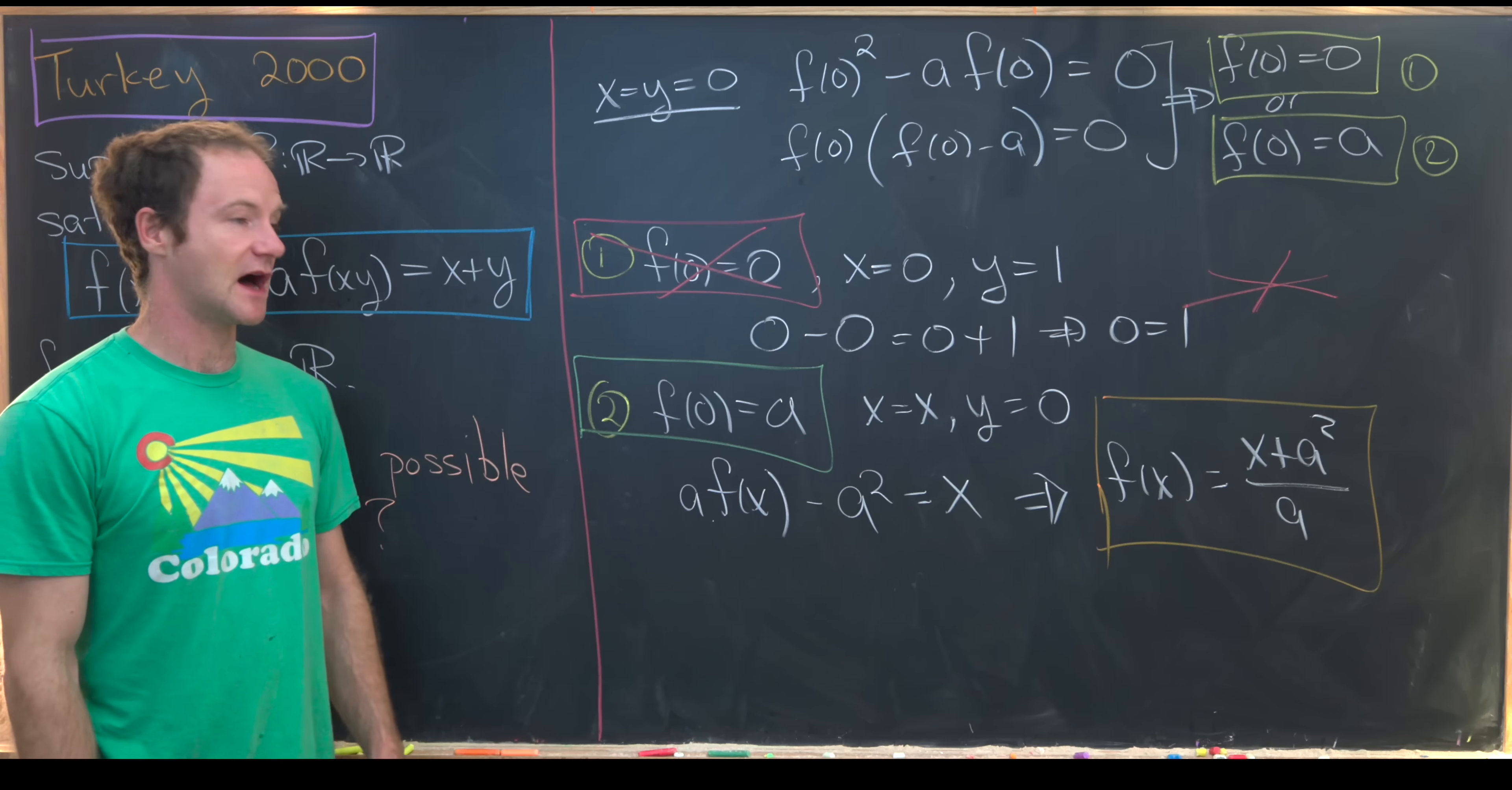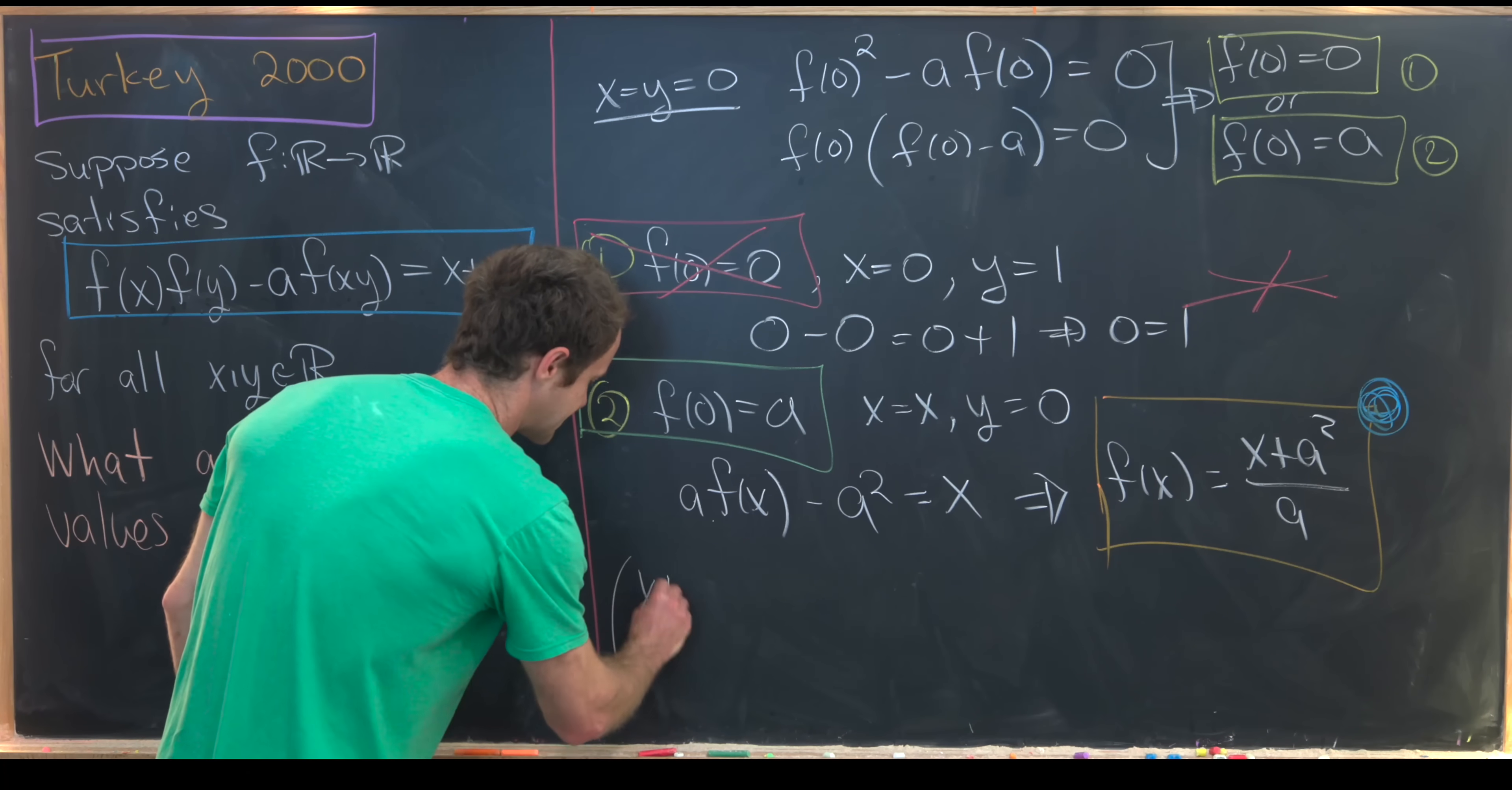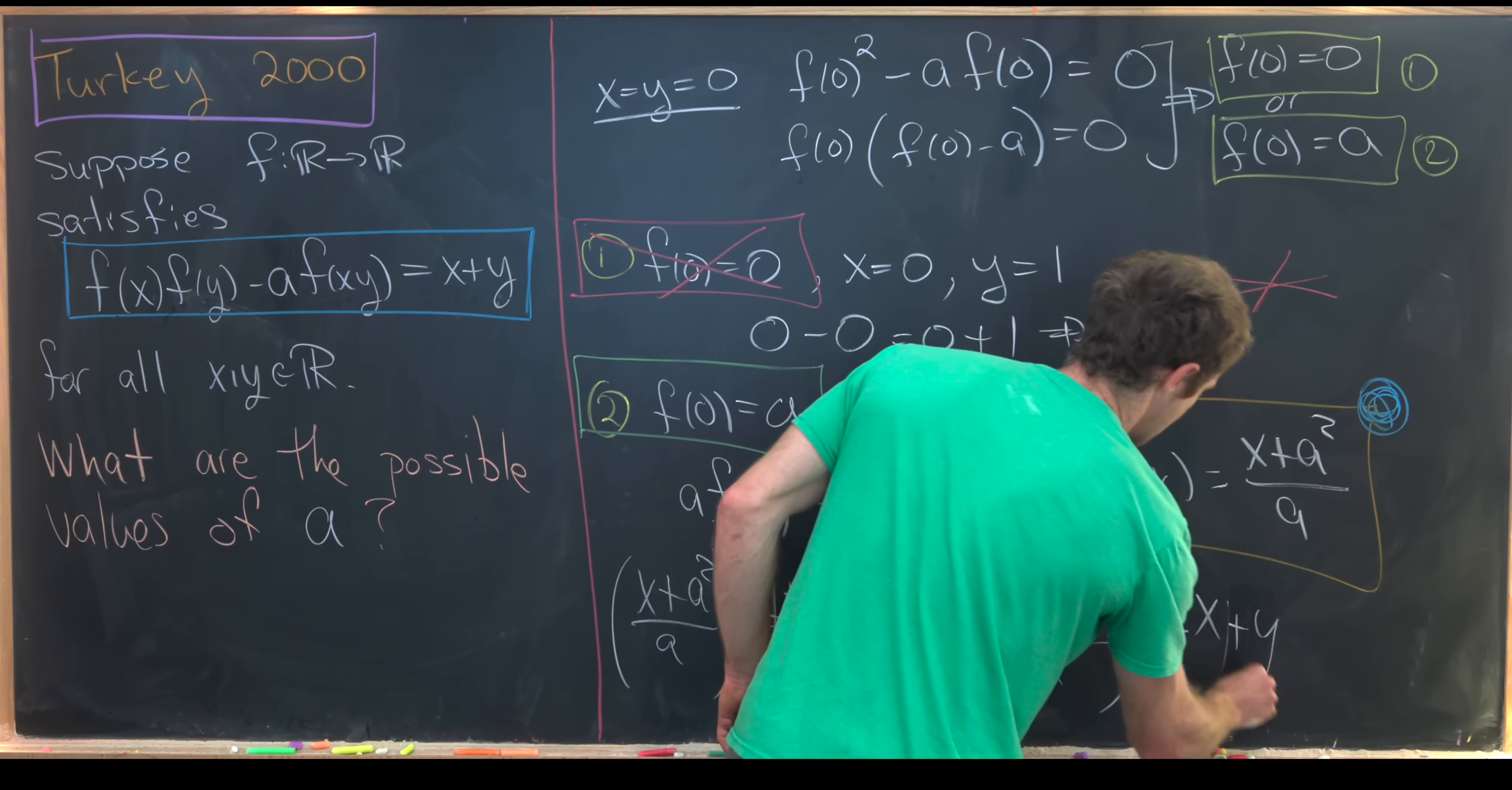But this equation may not satisfy our given functional equation all of the time. So in fact, what we want to do is plug this into our given functional equation, which I have over here in blue. So that's going to give us the following. We'll have f(x) times f(y), but that'll be (x + a^2)/a times (y + a^2)/a, that's this term, minus a times f(xy), but that's (xy + a^2)/a equals x+y.